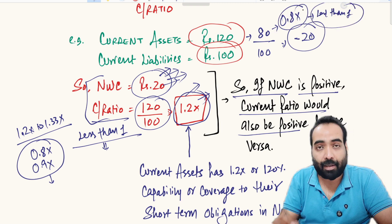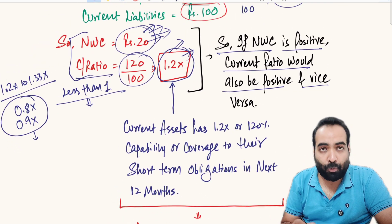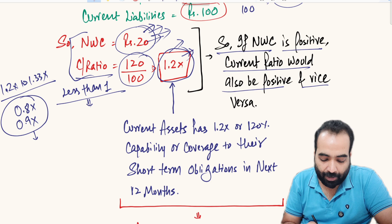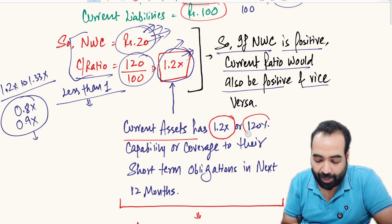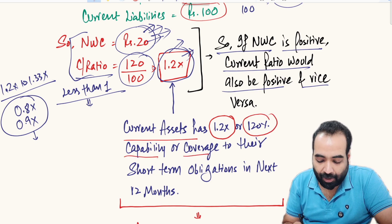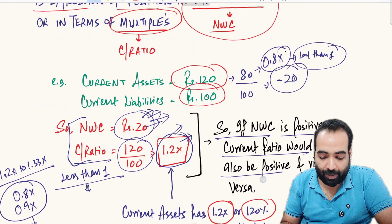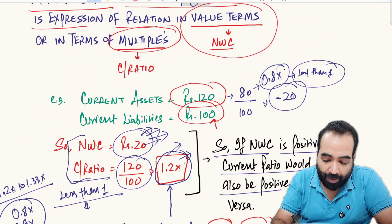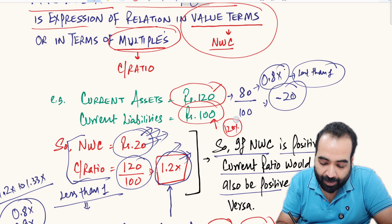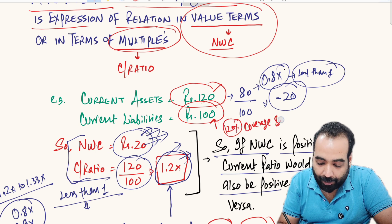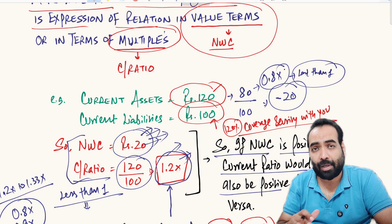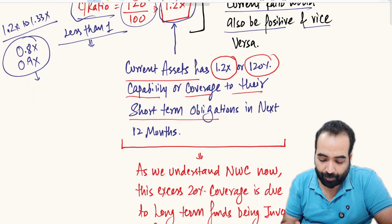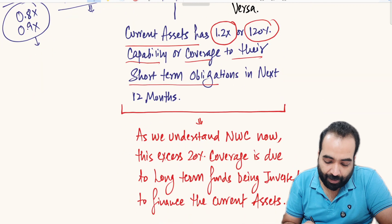A current ratio of 1.2x means the current assets have 1.2 times — or 120% — capability or coverage to meet short-term obligations. So if you have to pay ₹100 in the next 12 months, then you have 120% coverage or security to repay those ₹100 within the next 12 months. This ensures that you have a good solvency position in the next 12 months.